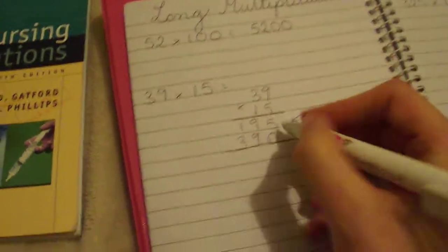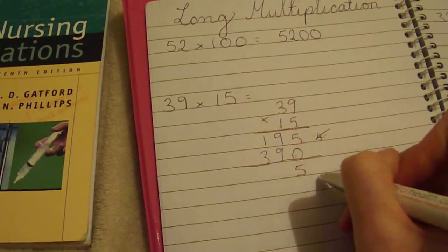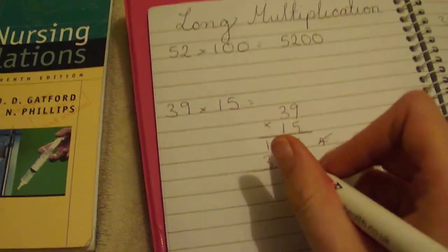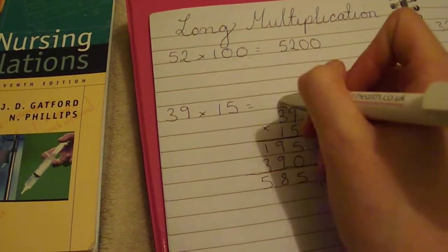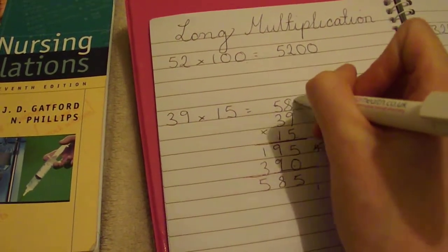You then have to add these two numbers together. So 0 and 5 is 5. 9 and 9 is 18, so you're carrying your 1. And 1 and 3 is 4, and you're adding your 1 here. So your answer up here will be 585.